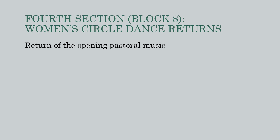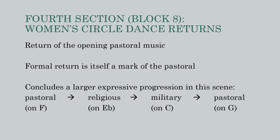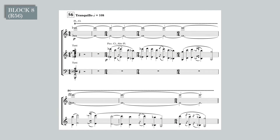In this final section of the scene, the opening pastoral music returns, and this return itself is a mark of the pastoral. It concludes a larger expressive progression: pastoral on F, religious on E-flat, military wild dance on C, returning to pastoral on G. This final block returns to the opening music of the scene with the same trill on E-flat, the same descending minor thirds, the same diatonic melody in octaves, and roughly the same rhythmic layout.